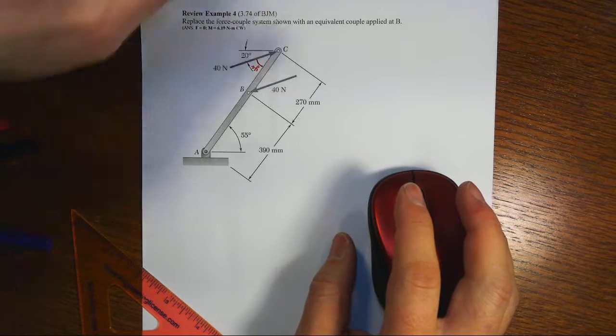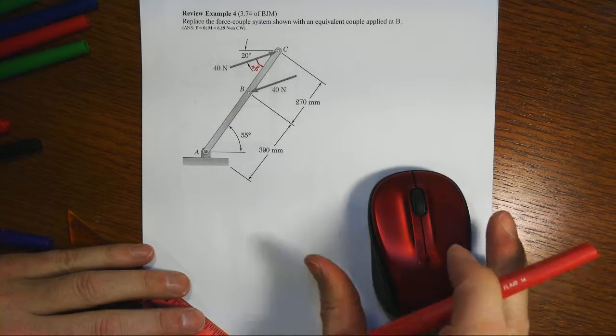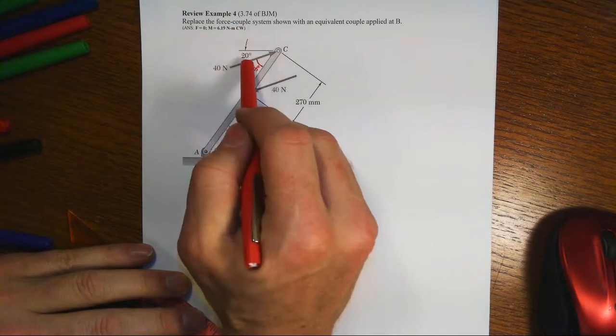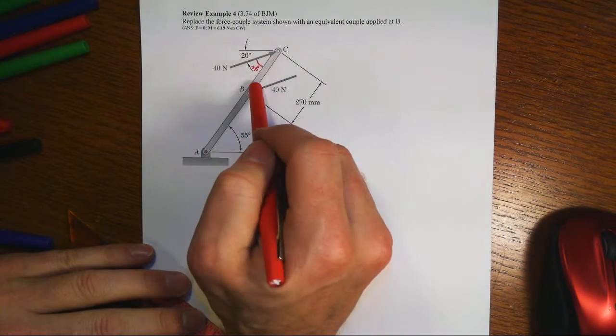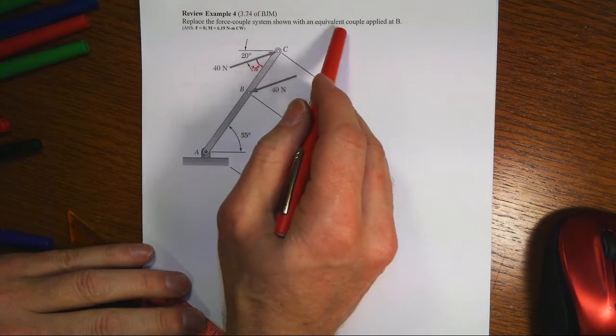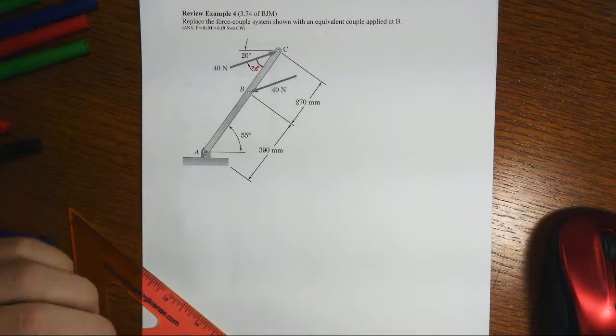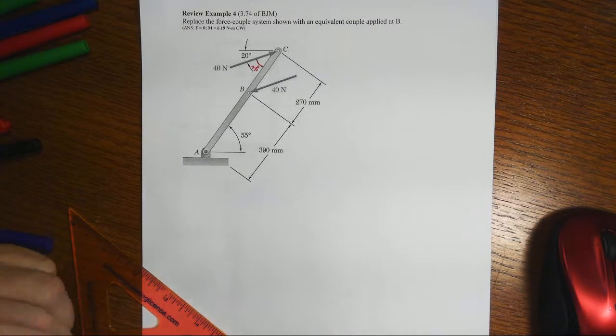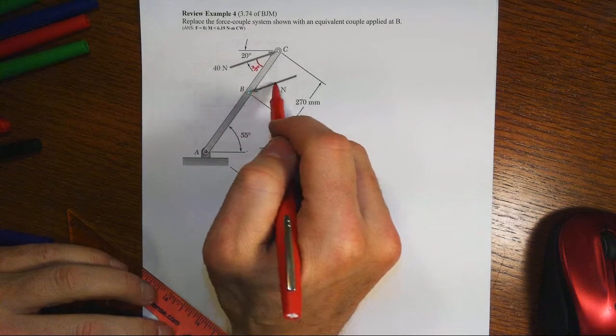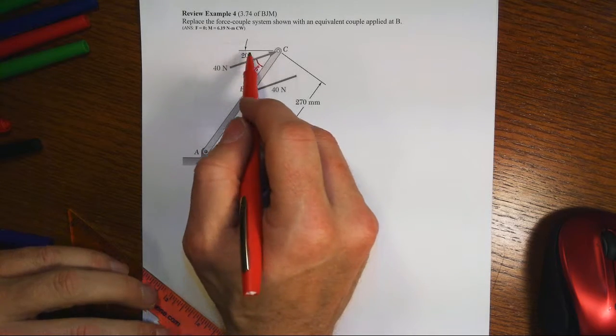In this example number four, we're asked to replace the force couple system with equal opposite parallel forces with an equivalent couple applied at point B. Note that the forces are aligned such that they are 20 degrees with respect to the horizontal.